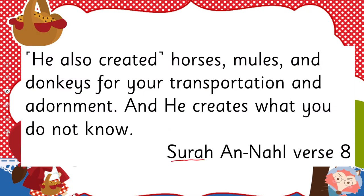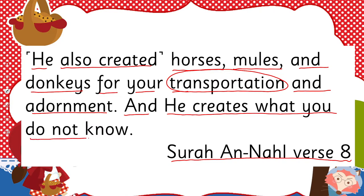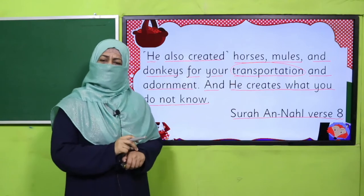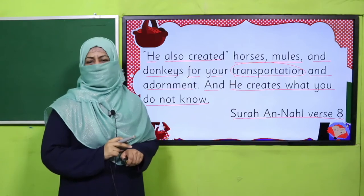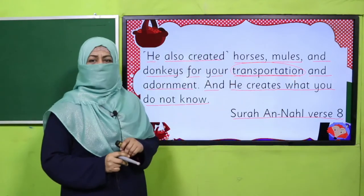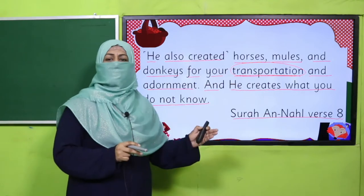Let's start with the name of Allah. Allah mentions in the Quran, Surah Al-Nahl, verse 8: 'He also created horses, mules, and donkeys for your transportation and adornment, and He creates what you do not know.' SubhanAllah! You see, everything is mentioned in the Quran. Allah has mentioned He created these animals for transportation — horse riding takes you from one place to another, and that is called transportation.